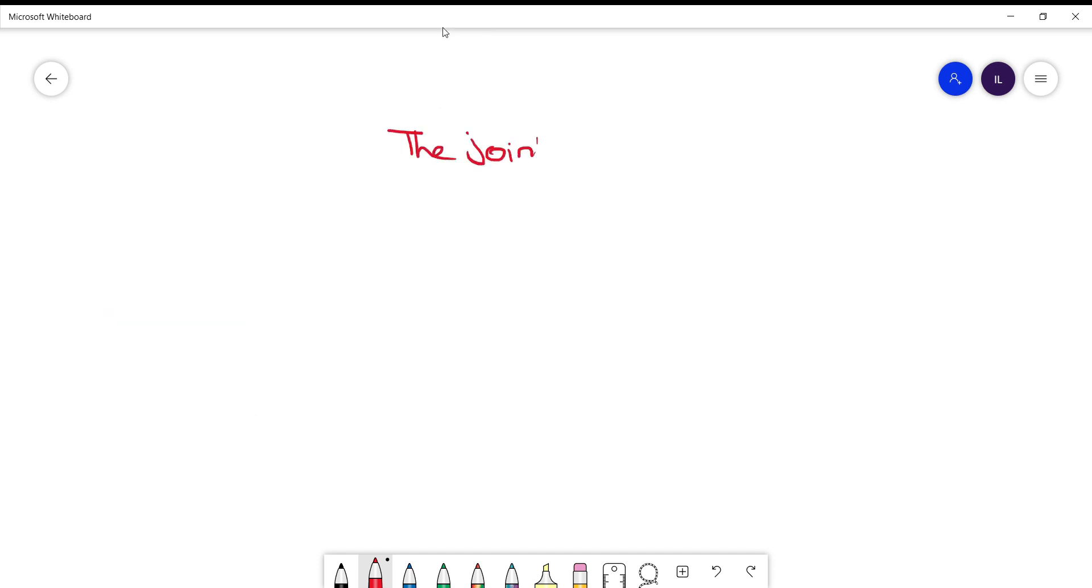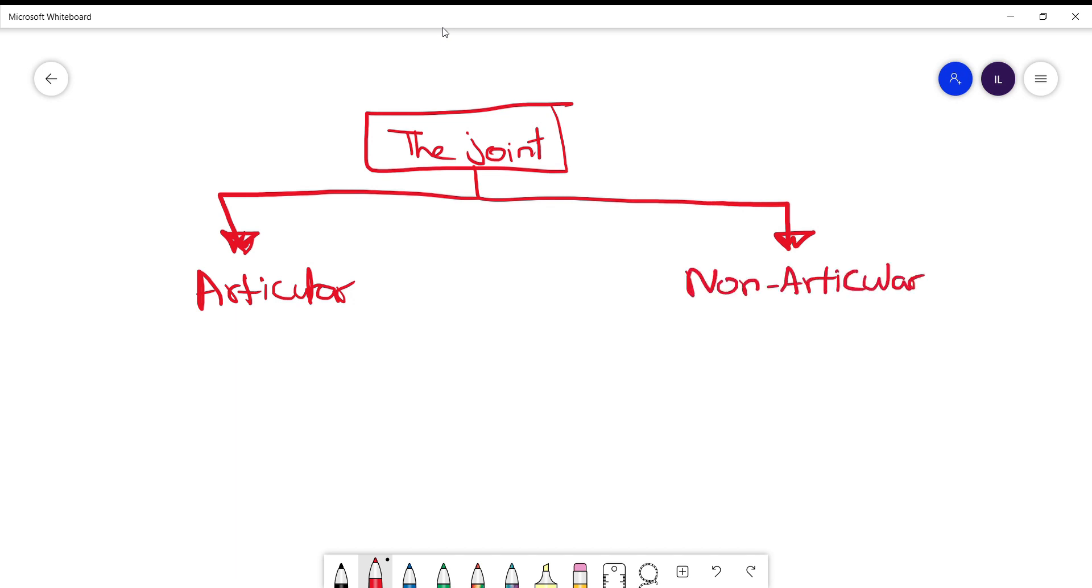Based on the anatomy we mentioned above, you can divide the joint into articular and non-articular parts. Why is this important? Because the pain the patient describes will be different. In articular diseases the pain will be more diffuse and deep, while in non-articular diseases like the skin and bone it will be more localized, and when you examine the patient there will be point tenderness.